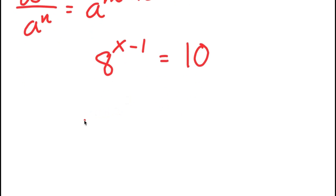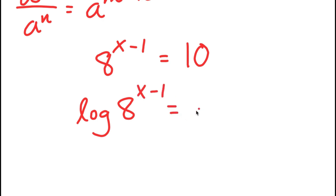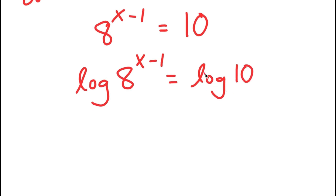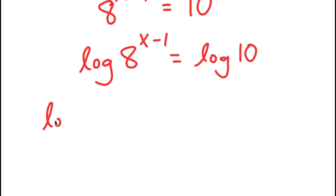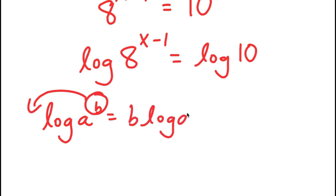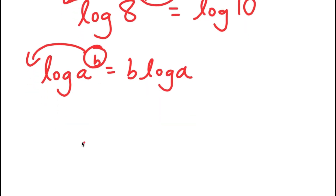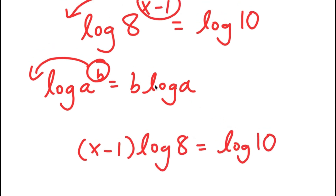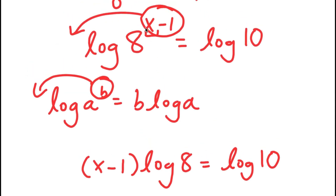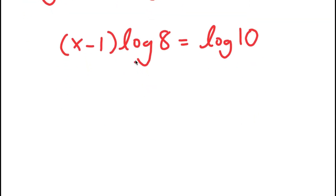From here I'm going to take the log on both sides, so I get log of 8 to the power of (x minus 1) is equal to log of 10. The reason I took the log on both sides is because I can use the property that log(a^b) equals b times log a — I can move the exponent to the front. So x minus 1 times log 8 equals log 10. This is important because before x was an exponent, but now it's a real term and much simpler to solve.